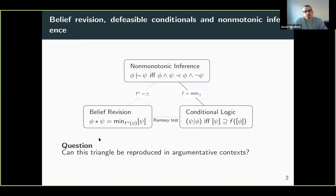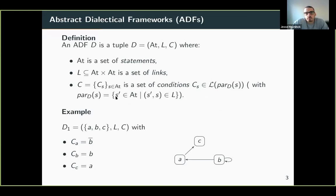The question we answered in this paper is whether this triangle can be reproduced in argumentative contexts. The formal model of argumentative context we used is abstract dialectical frameworks, which can be seen as a generalization of Dung's abstract argumentation frameworks. They share the representation of an argumentative context as a directed graph, where nodes represent arguments.